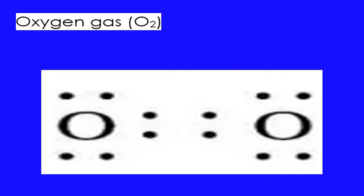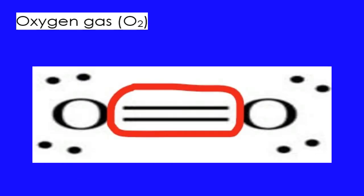Number one: oxygen gas. Oxygen belongs to Group 6A and has six valence electrons and six electron dots. The covalency number is two, thus oxygen can form double bonds between two oxygen atoms.